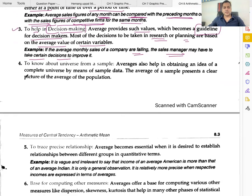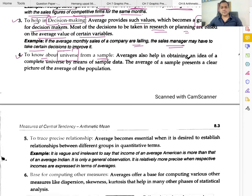Function four: to know about the universe from a sample. Averages also help in obtaining an idea of the complete universe by means of sample data. The average of a sample presents a clear picture of the average of the population.